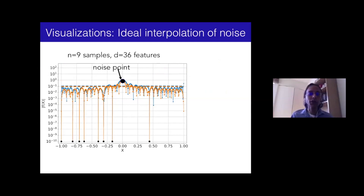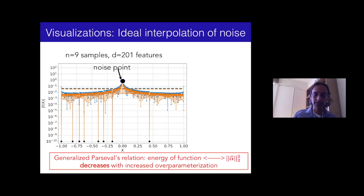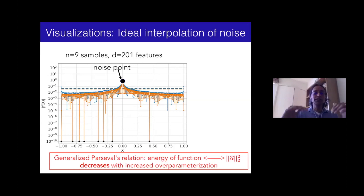What's happening here is the benefit of Parseval's theorem in signal processing: because I have an orthonormal feature family, the energy in the function equals the energy in the weights. If I want to do well on test points — where the truth is zero — I want the reconstructed signal to be as close to zero as possible, which means making all the weights as small as possible. By giving more flexibility through more features, the algorithm is able to make these weights smaller, causing the mean squared error to drop like 1/d.